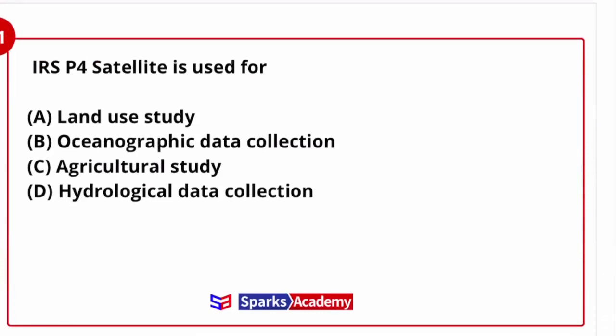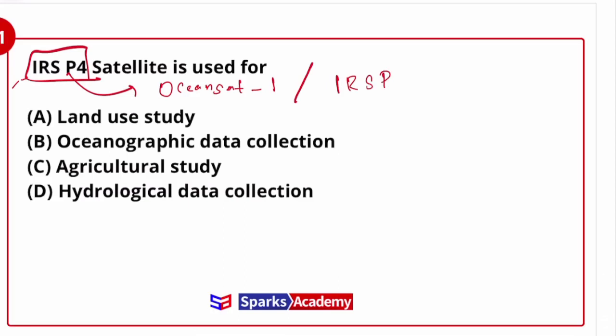Next question: IRS P4 satellite is used for what? IRS P4 is nothing but OCEANSAT-1 satellite, used for ocean applications. It comes under the IRS P satellite series — Indian Remote Sensing Program satellite series. It is a polar satellite launched by PSLV-C2. So the correct answer for this question is oceanographic data collection.